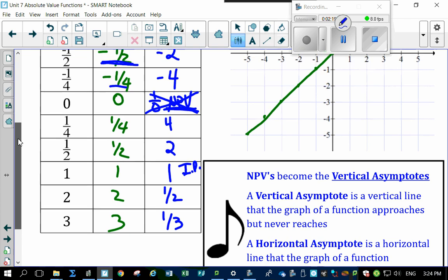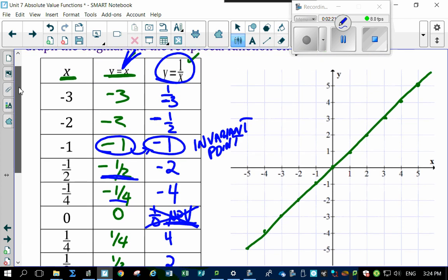Okay. How do you plot them? Of course, there's your x value at minus 3. Now you're at minus a third. So minus 3, which is way out here, is minus a third, which is just below this line. Interesting. At minus 2, we're at minus a half. At minus 2, we're about minus a half, which is here. At minus 1, we're at minus 1. Oh, so there's our invariant point.